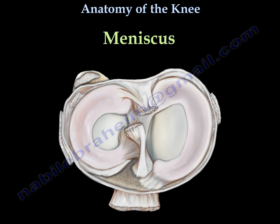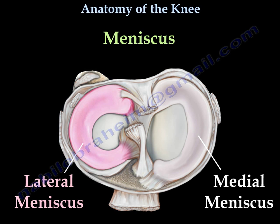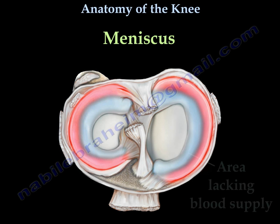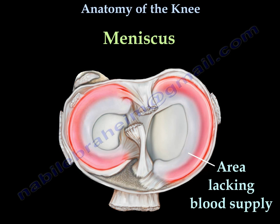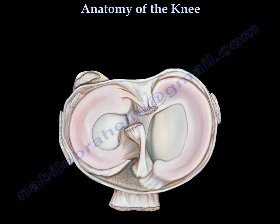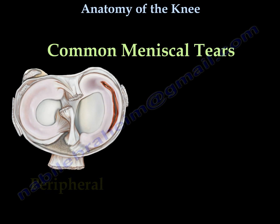Inside the knee, between the femur and the tibia, you will find the cushions or the meniscus. Here you can see the medial and the lateral meniscus. The area of the meniscus which lacks blood supply is visible here. The blood flow is located within the peripheral portion of the meniscus. Healing of the repaired meniscus is good if the tear is at the periphery because of good blood supply.